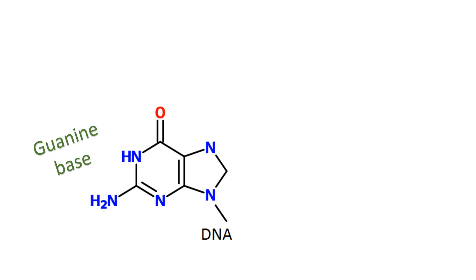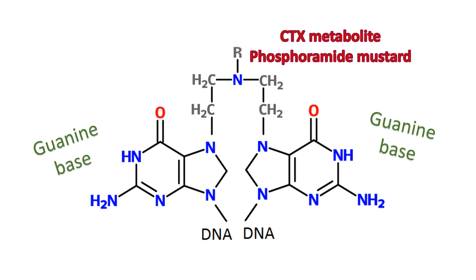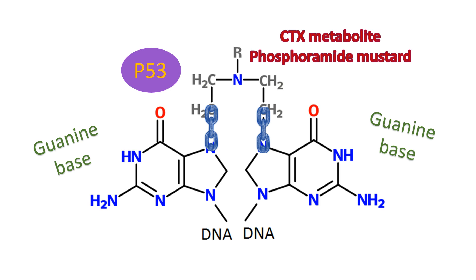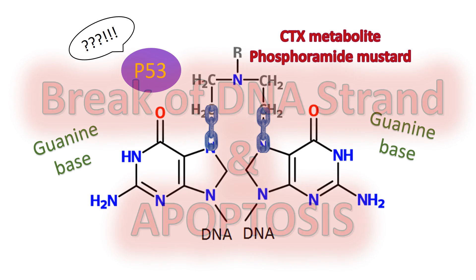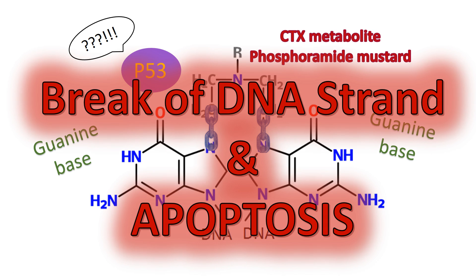Let's go through this one more time. You've got two guanine bases; our phosphoramide mustard — or any of our nitrogen mustards — comes through with two functional sites and makes a covalent bond across the DNA, bridging those two guanine bases. P53 comes through, sees that the DNA has been disrupted by the phosphoramide mustard, and signals to kill the cell. This kills our tumor cells, and because it's non-cycle specific, we can really target those tumor cells.